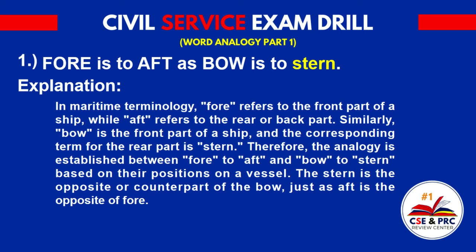Explanation: In maritime terminology, 'for' refers to the front part of a ship, while 'aft' refers to the rear or back part. Similarly, 'bow' is the front part of a ship, and the corresponding term for the rear part is 'stern.' Therefore, the analogy is established between 'for' to 'aft' and 'bow' to 'stern' based on their positions on a vessel. The stern is the opposite of the bow, just as aft is the opposite of for.